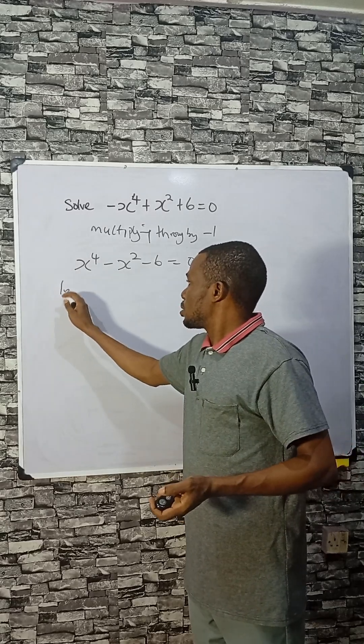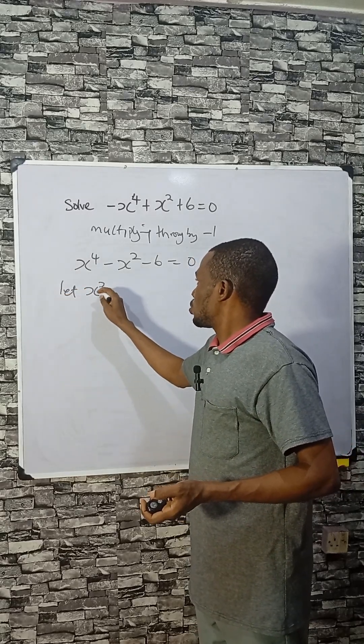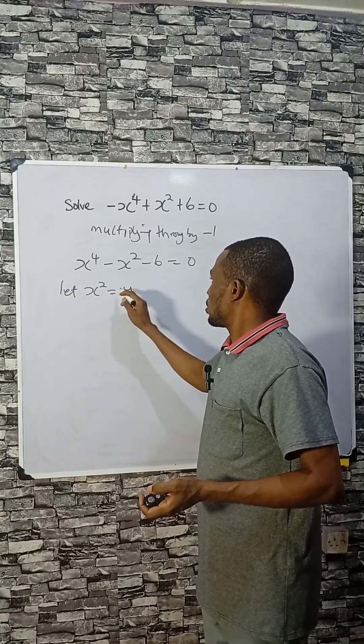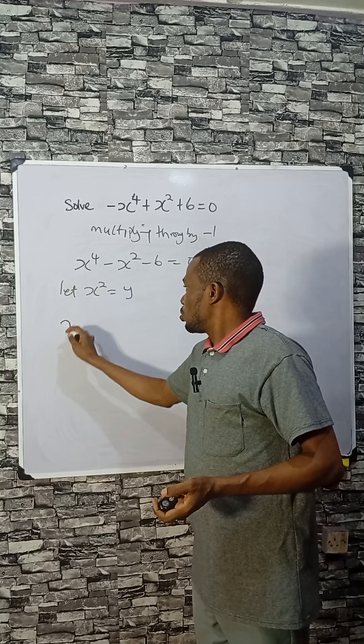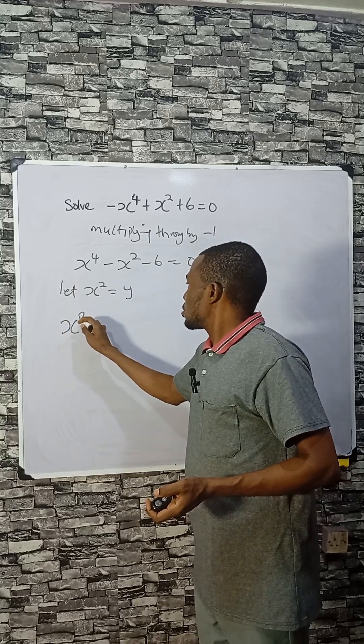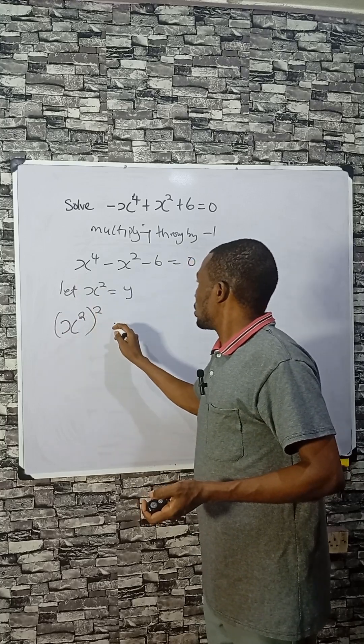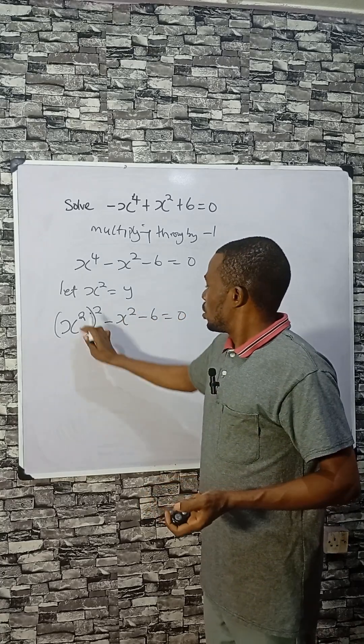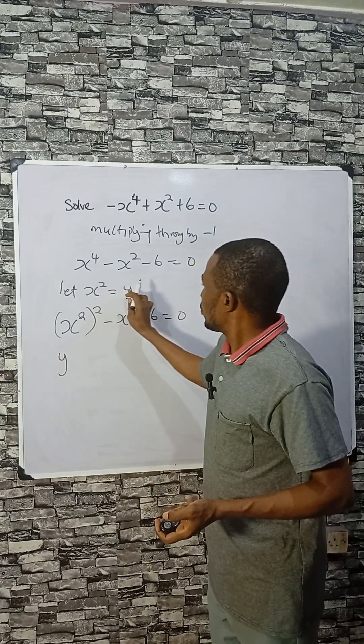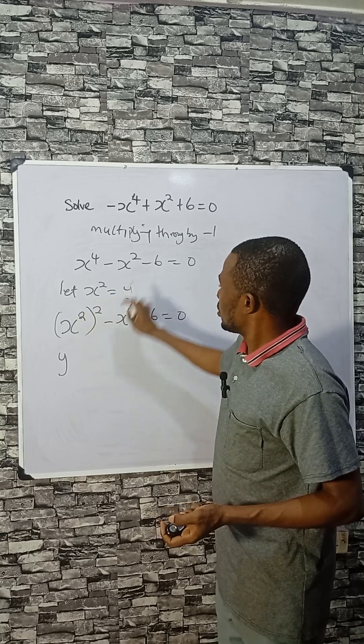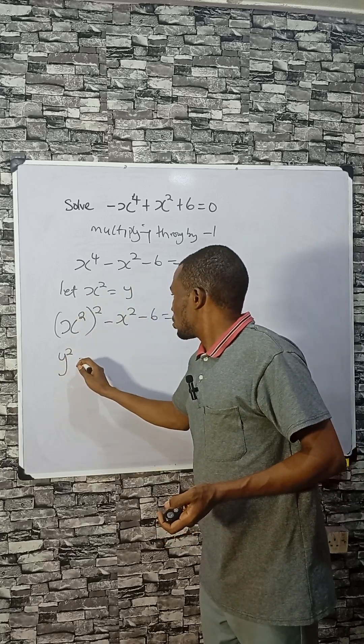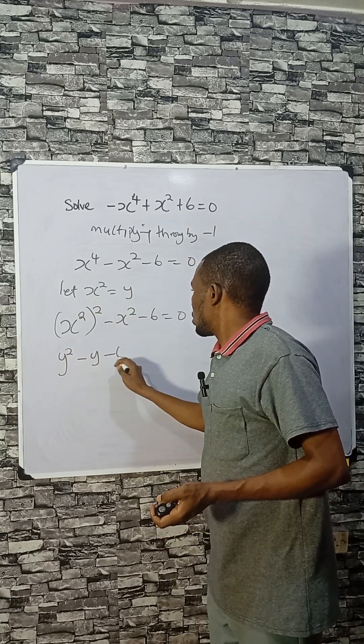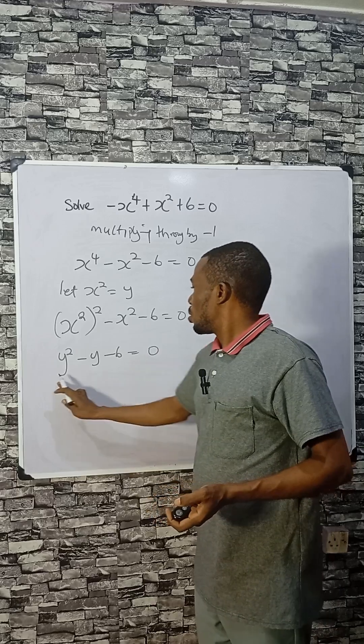If I let x to the power 2 as x squared equals to y, so I can do this as x squared minus... So if x squared represents y, that means here is y squared minus y minus 6 equal to zero.